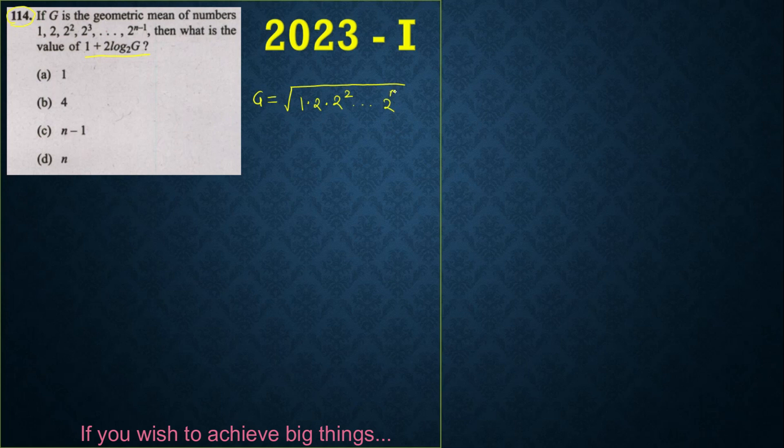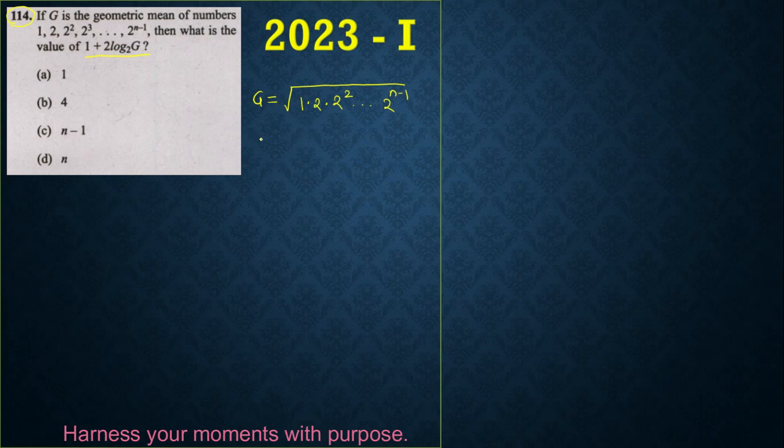So no need to take all the numbers, we can use the substitution method. You can take few of them, first few of them, and you can cross verify your answer. So what I am saying is, they have given the numbers like 1, 2, 2 square, 2 cube, and so on.